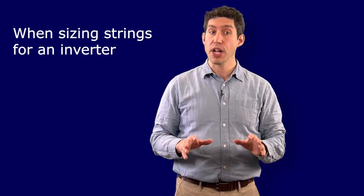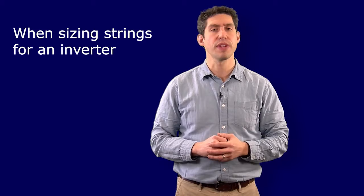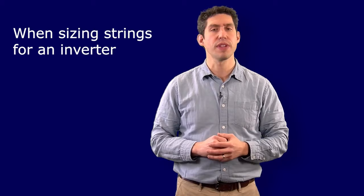Now there are situations where modules can be wired in several different ways to meet the input requirements for both current and voltage of the inverter. In general, high voltages are preferred over high current, so there's less loss due to resistance, which is also why we wouldn't want to use, say, 12 strings of 2, where we'd have low voltages with large numbers of parallel strings.